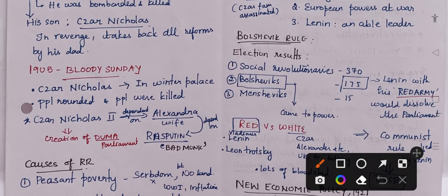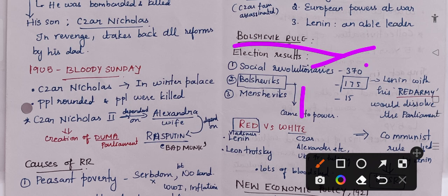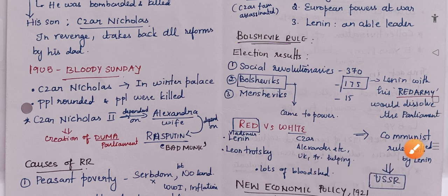Next was the Bolshevik rule — Lenin came to power. Election results were announced: Social Revolutionaries got 370 seats, Bolsheviks got 175 seats, and Mensheviks got only 15 seats. Lenin with his Red Army dissolved the parliament, and ultimately the Bolsheviks came to power.